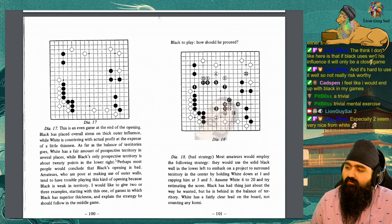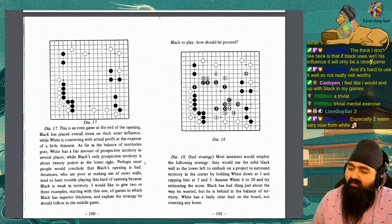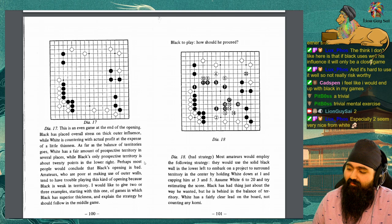Diagram 18. Bad strategy. Most amateurs would employ the following strategy. They would use the solid black wall in the lower left to embark on a project to surround territory in the center by holding white down at 1 and capping him at 3 and 5. Assume white 6 to 20 and try estimating the score. Black has had the thing just about the way he wanted, but he is behind in the balance of territory. White is a fairly clear lead on the board, not counting any komi.